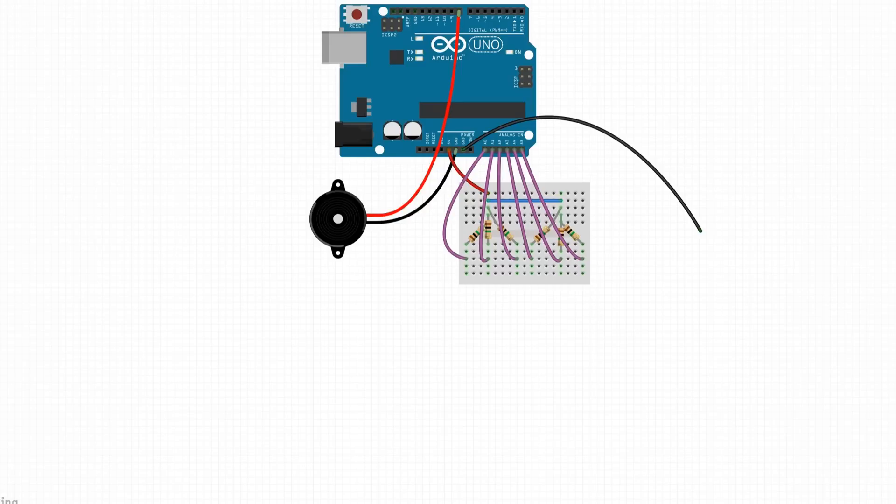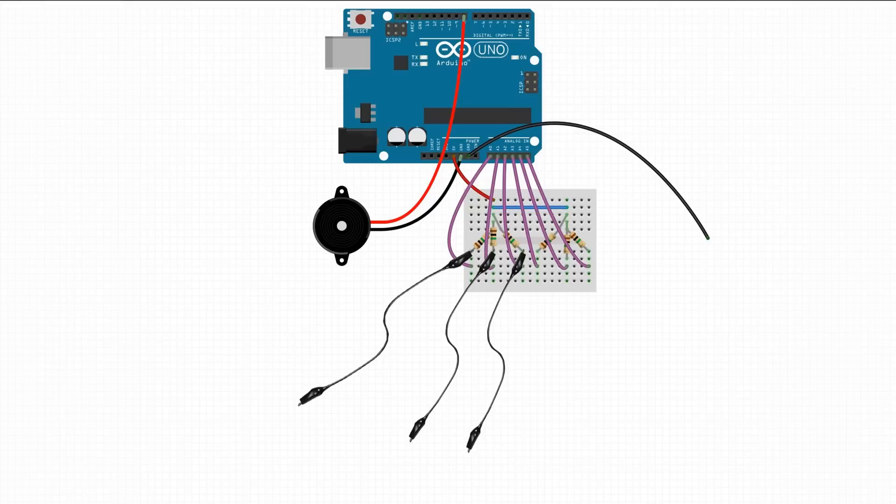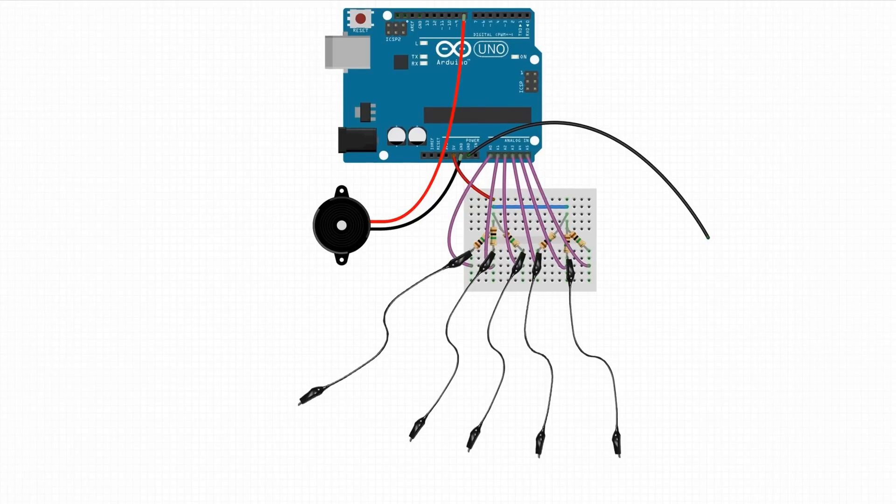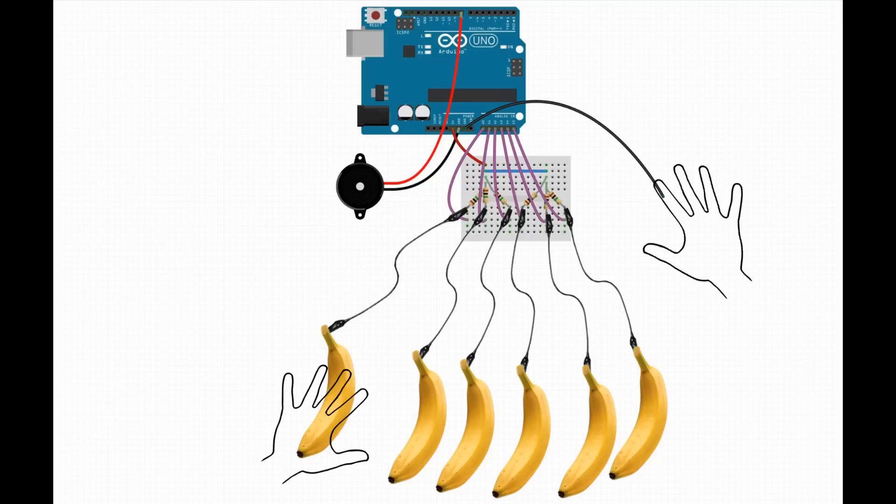Connect an alligator lead to each resistor leg. Then connect your bananas. Once you have the code uploaded, keep one hand on the ground wire and touch a banana with the other to make a sound.